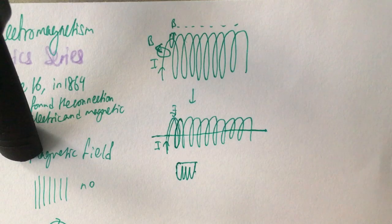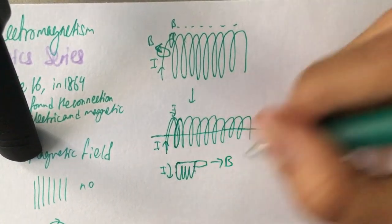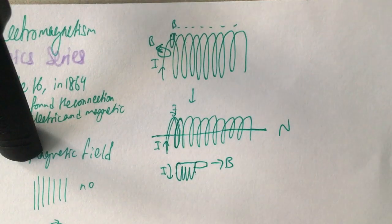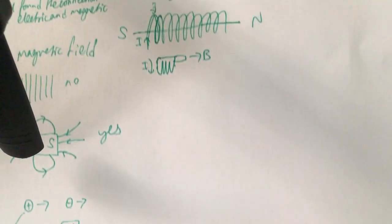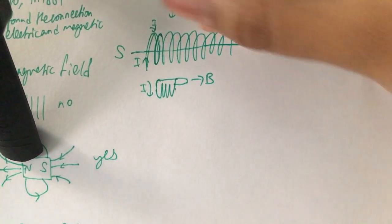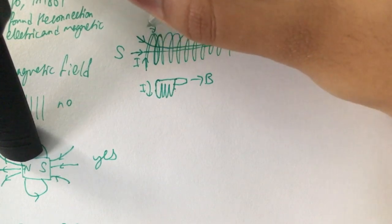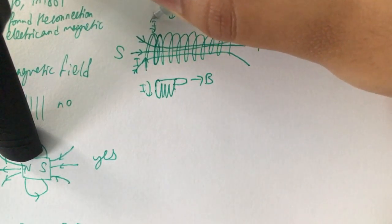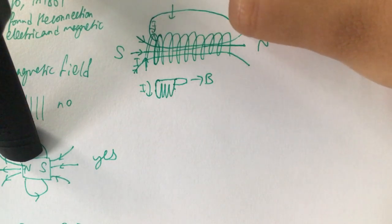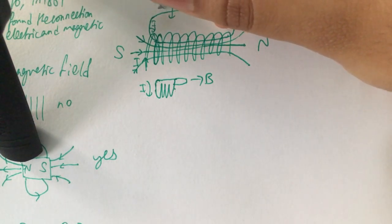Moving on — you have three different equations in your data booklet, and you're not expected to memorize them. You use them to find the magnetic flux density of the field, which is the strength of the magnetic field, represented by B. The equations are: B = μ₀I / 2πd for a wire; B = μ₀NI / 2R for a coil; and B = μ₀NI for a solenoid. You just need to read them off the data booklet, transfer them to the question, and put in all the values.